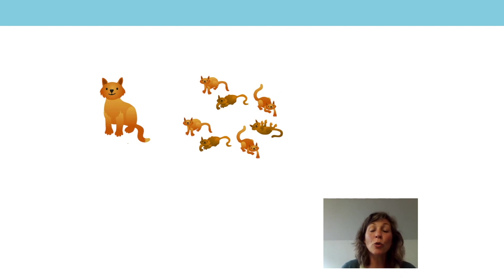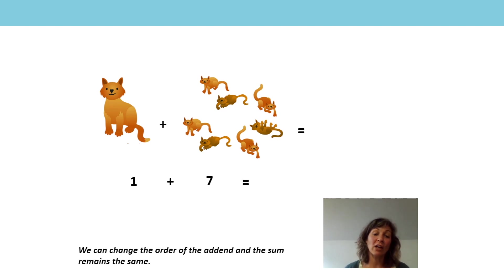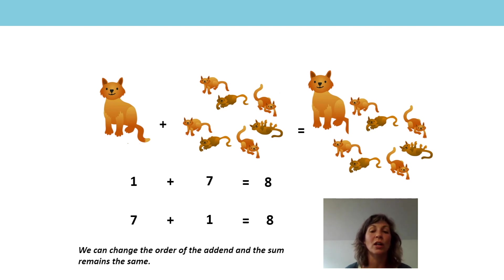Let's have a look at this picture. You can pause the video and tell somebody what you can see. Can you see one adult cat and seven kittens? What would the equation be if I wanted to know how many cats there were altogether? Did you say it's 1 plus 7 because I have one adult cat and seven kittens? But I know that we can change the order of the addends and the sum will remain the same. So instead of doing 1 plus 7, I'm going to do 7 plus 1 because I know that 1 more than 7 is 8. 1 plus 7 is equal to 8 and 7 plus 1 is equal to 8.